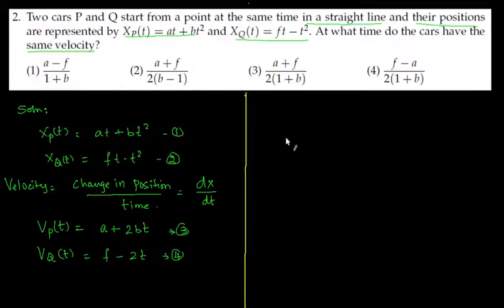So when the cars have same velocity we can equate these two equations: a + 2bt is equal to f - 2t. So here we have got the terms t here and t here. So we can rearrange them and get 2bt + 2t on one side and f - a on the other side.